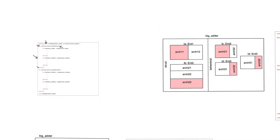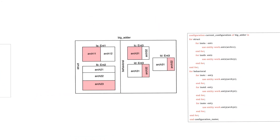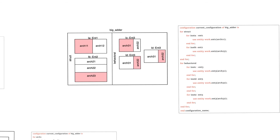Let's take a look at an example. In this example, the highest level architecture is called BigAdder — that's actually an entity name — and BigAdder has two architectures: one called struct and one called behavioral. Within the architecture struct, we have two entities, one named Ent1 and one named Ent2. Each of them has multiple possible architectures: Ent1 has two possible architectures, Arch11 and Arch12, whereas Entity2 has three possible architectures.